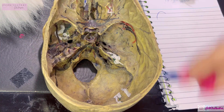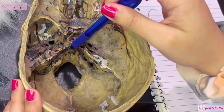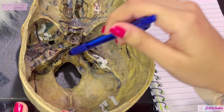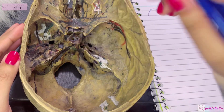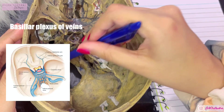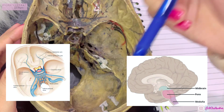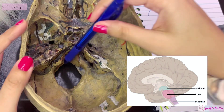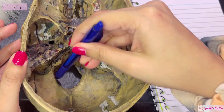The clivus has two functions: it houses the basilar plexus of veins, and it supports your pons and medulla, which is the part of the hindbrain lying in front.